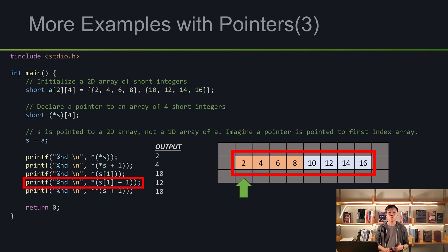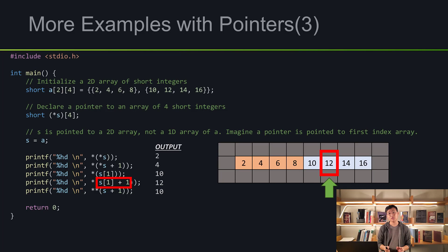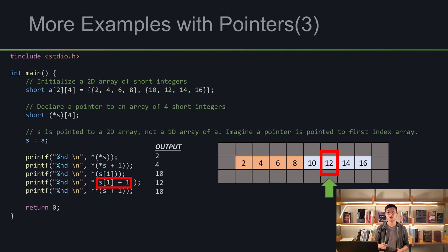Let me show another example — this one prints out 12. S represents the entire matrix, and S[1] represents the second array. So the pointer moves to the second array, and it always points to the very first element. Remember, S[1] is not the value — it is the address of 10. So if we add 1, we're telling the computer we want the next address, which is the address of 12. Now to print out 12, we have to dereference it one more time. That is how 12 is printed.